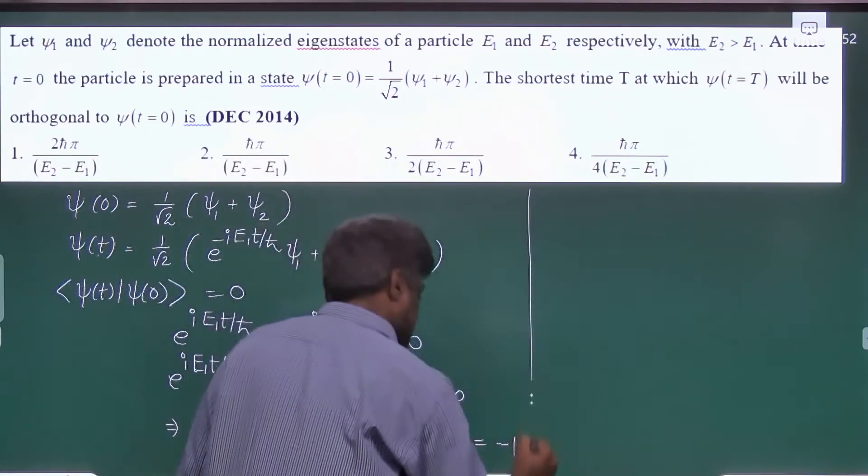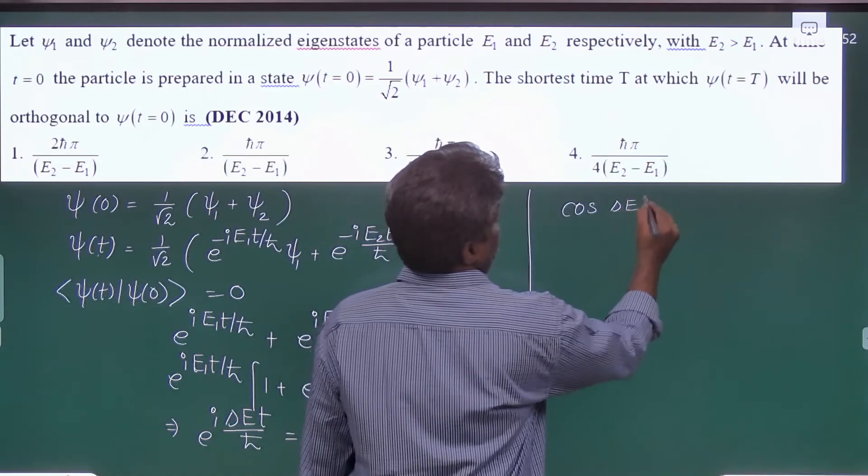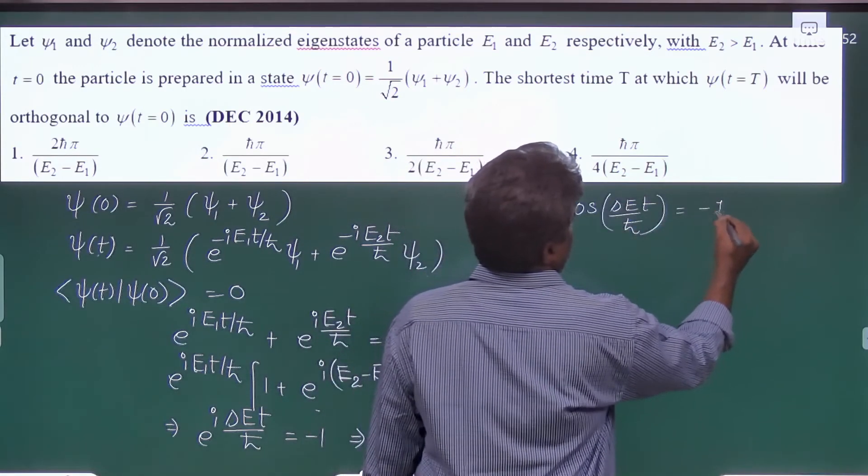So finally we got cos delta E t by h cross is equal to minus 1.